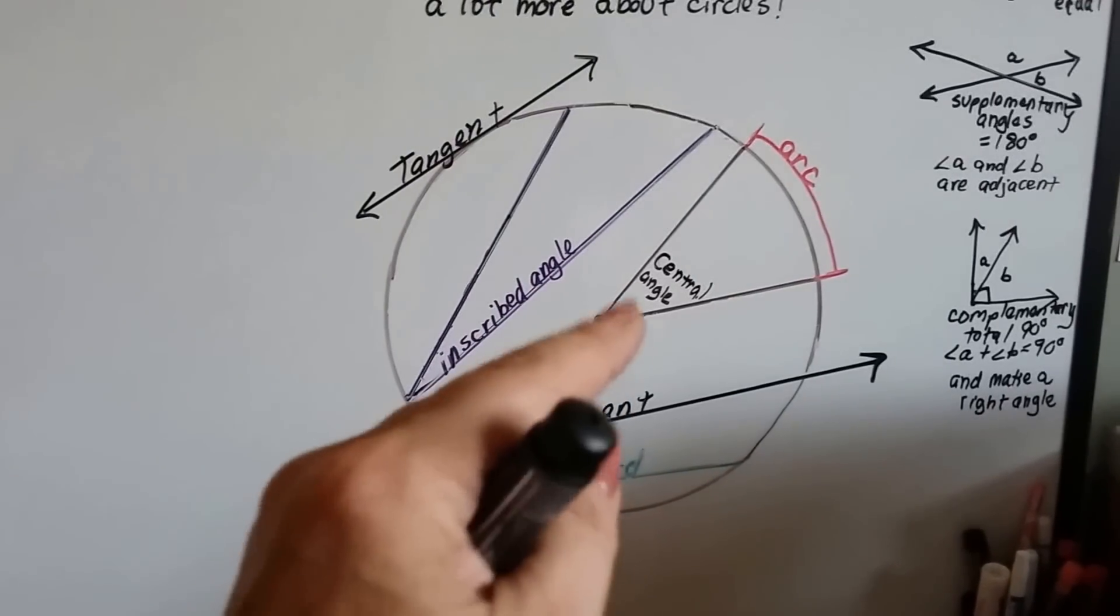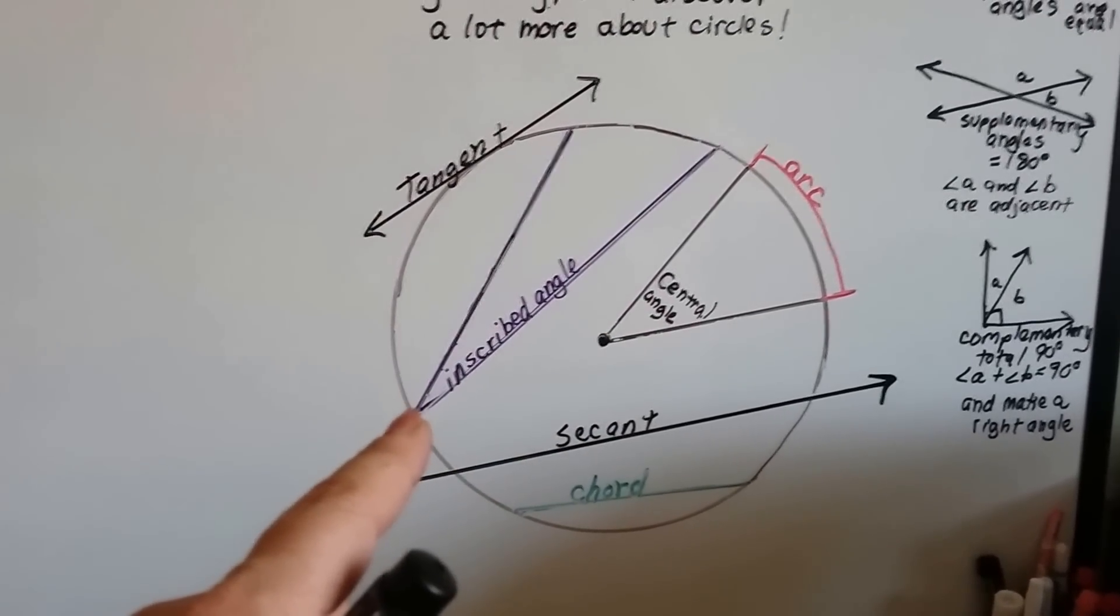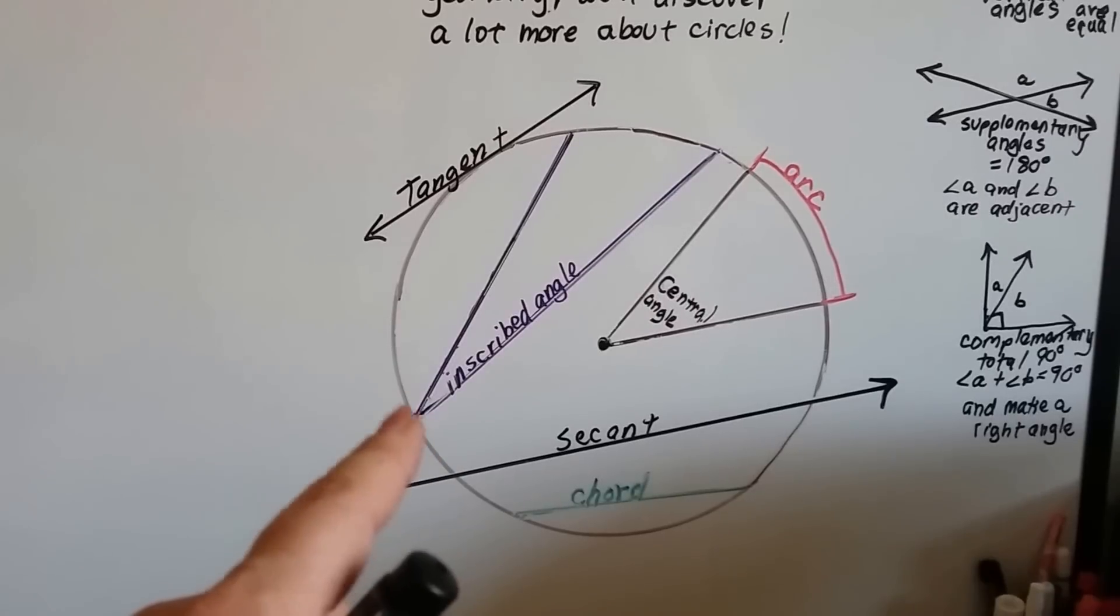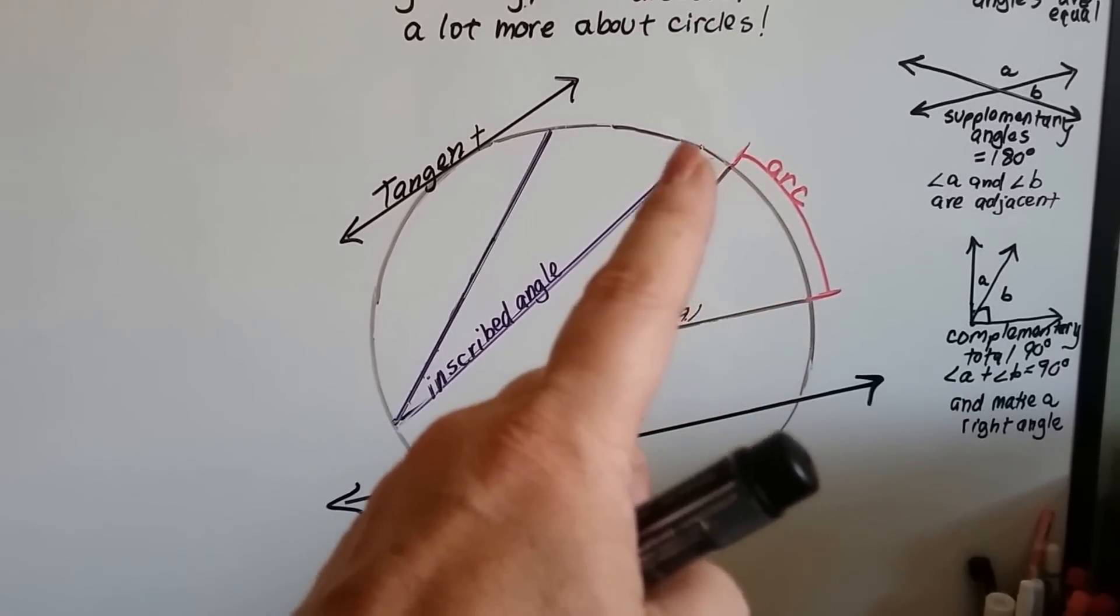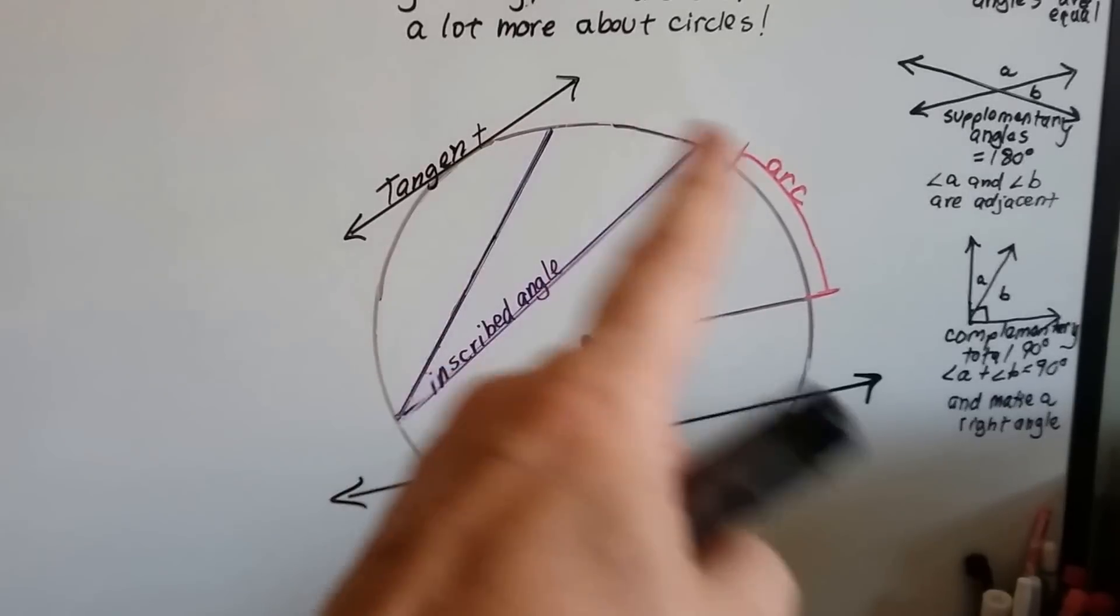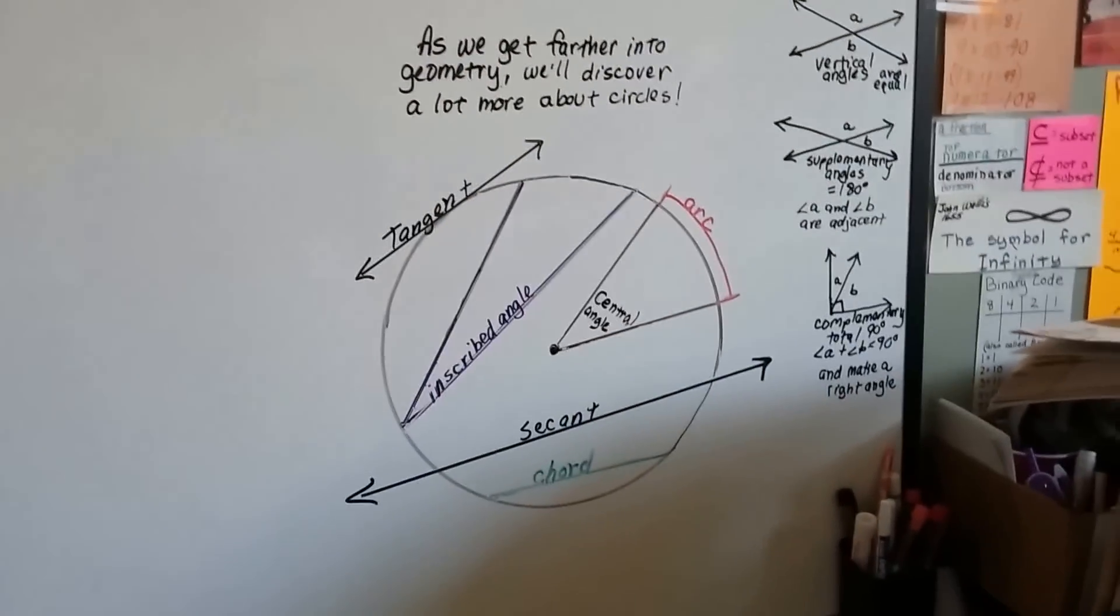A central angle has its vertex on the center point, and an inscribed angle has its vertex on the edge of the outside. And then there's arcs. There's a bunch of arcs here. You can have a major arc and a minor arc. So there's so many different parts to a circle.